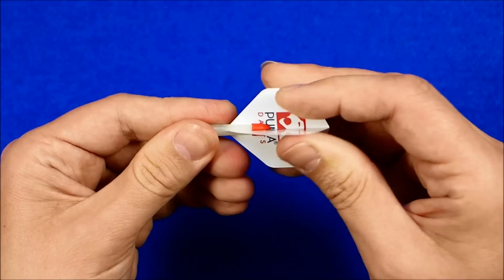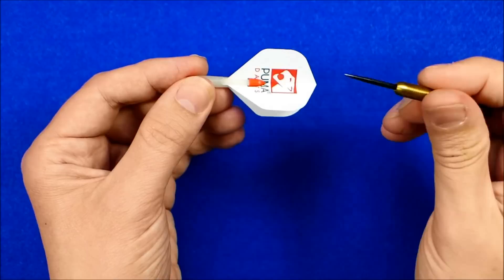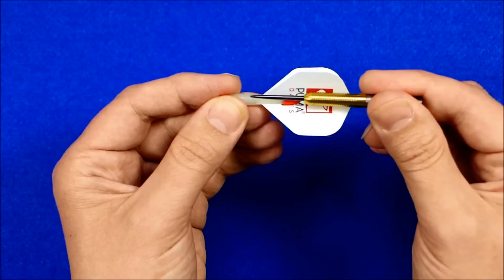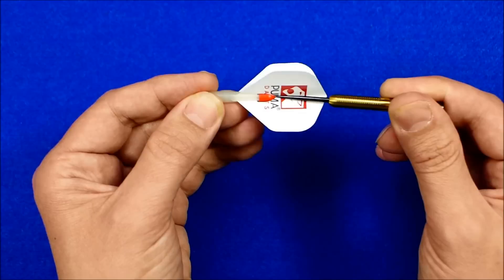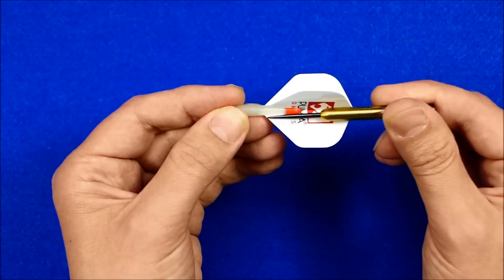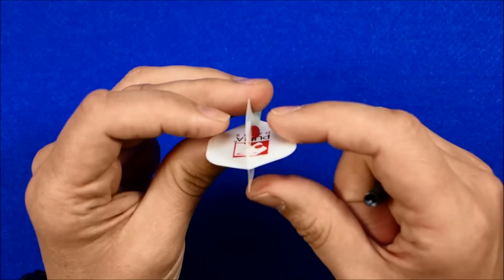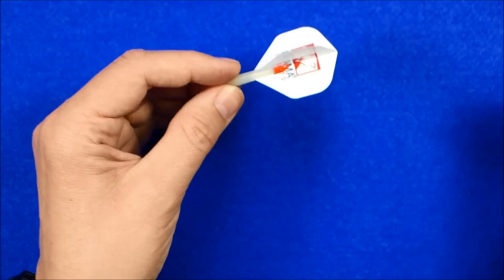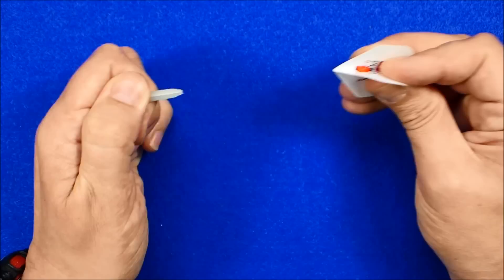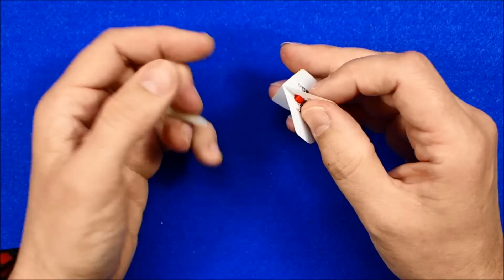But the idea is that when your dart comes in it's supposed to skim over the cap. I suppose it depends how the dart hits it because if it was to hit it straight on like that it's not going over it, but it's got to be better than a pigeon ring or a spring clip. I think a lot of these things like this are geared more for soft tip play than steel tip.